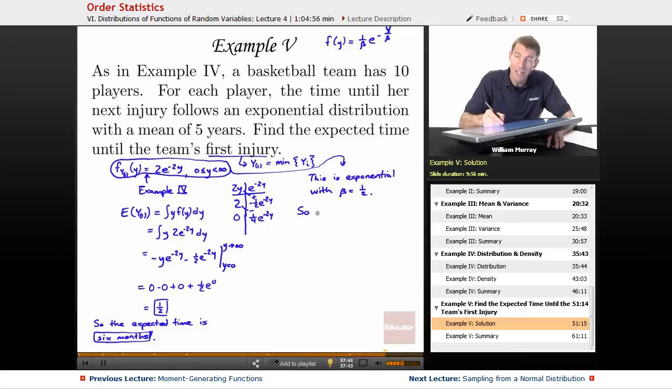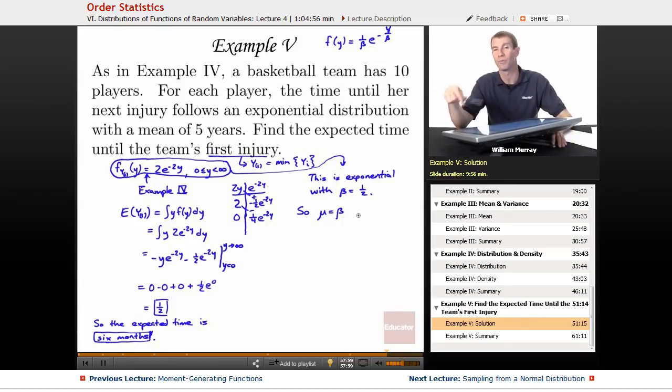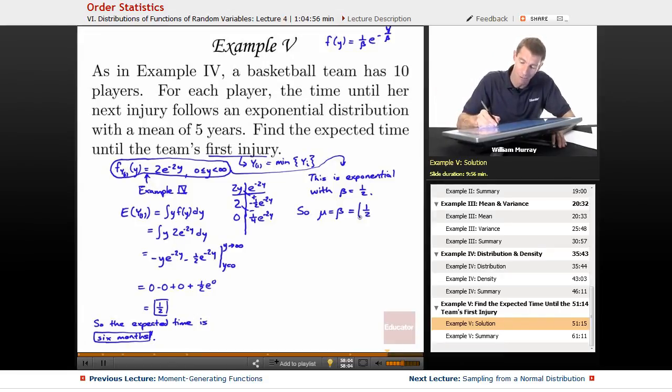That's the density function for an exponential distribution. What we have is something that exactly matches that if we take our beta equal to one half, because one over one half is exactly two. So we have an exponential distribution here. The expected value of the exponential distribution, the mean, is beta. This is a property we learned when we were studying the gamma distribution, because the exponential distribution was a special case of the gamma family.